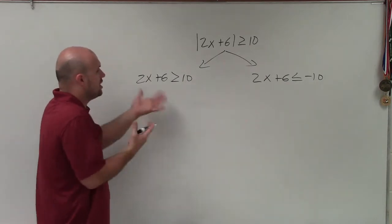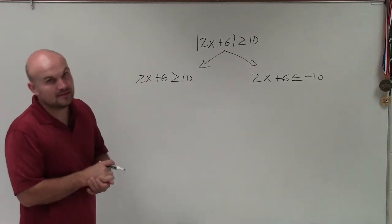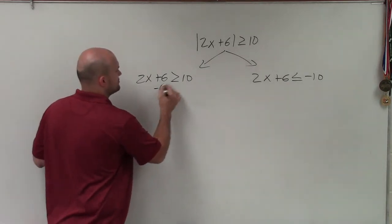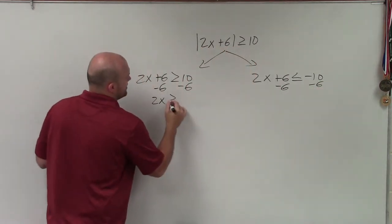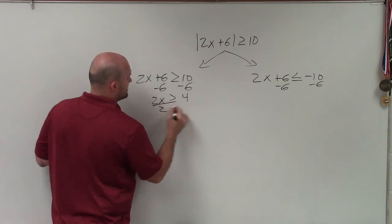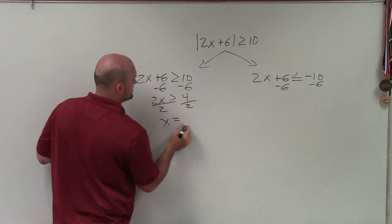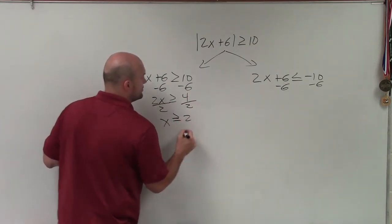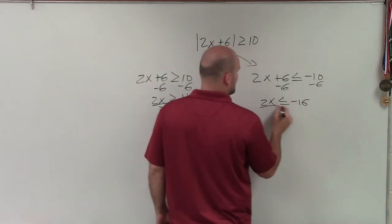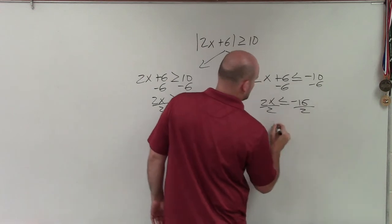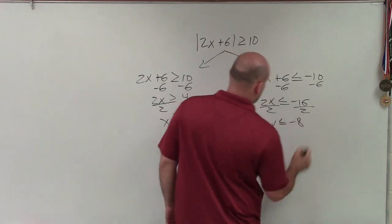So now we just solve each inequality separately and then graph. So here I subtract 6 on both sides. Here I'm going to subtract 6 on both sides. So I have 2x is greater than or equal to 4. Now divide by 2, divide by 2. x is greater than or equal to 2. Here I have 2x is less than or equal to negative 16. Divide by 2, divide by 2. And x is less than or equal to negative 8.